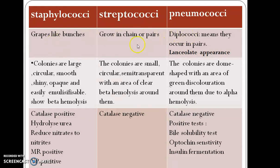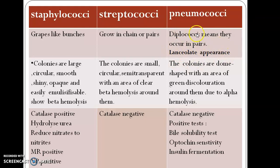The first point is morphology. Staphylococci grow in grape-like bunches — 'staphylo' means bunches. Streptococcus grows in chains or pairs. And pneumococci are in pairs; because they are in pairs we call them diplococci. An important feature is that they show a lanceolate appearance.